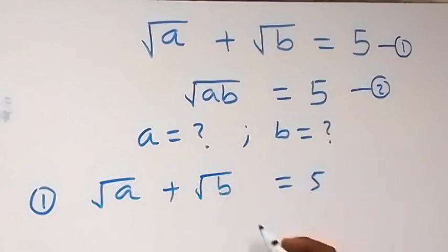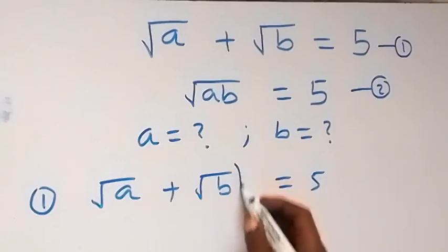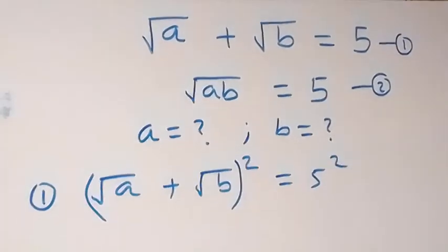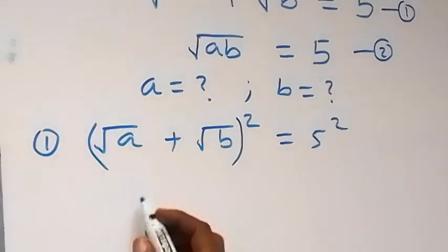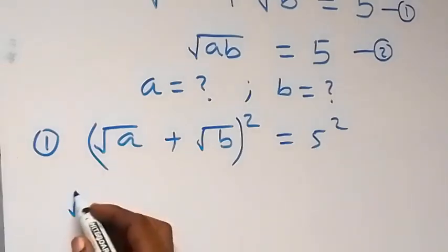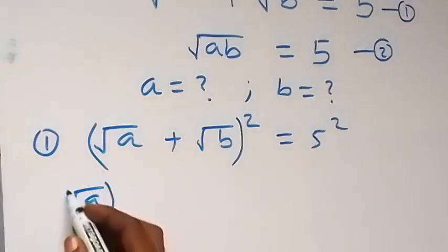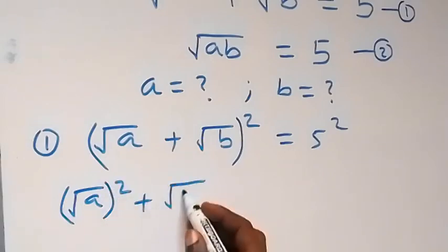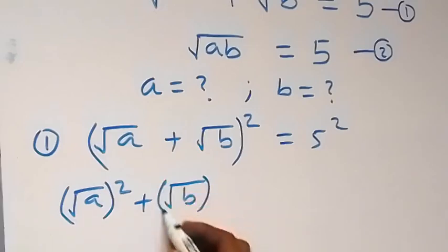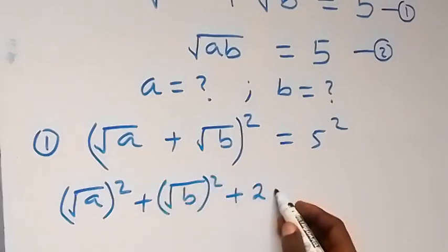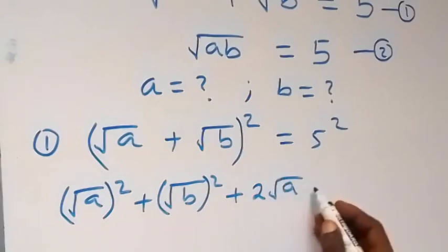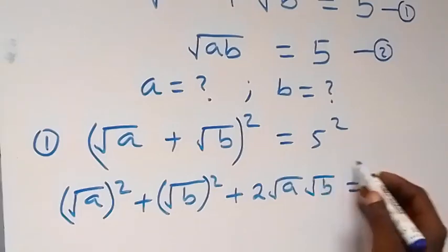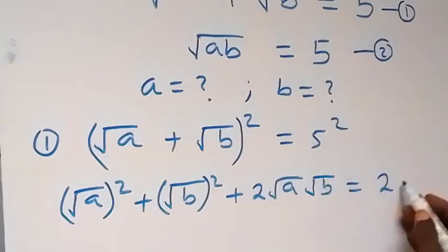Let's take the square on both sides — we have everything on this side squared. When we expand this, this gives us root A squared plus root B squared, then plus 2 times root A times root B, equals 5 squared, which is 25.